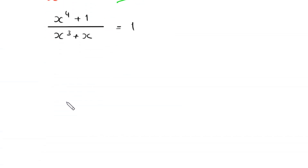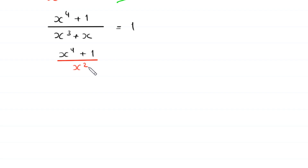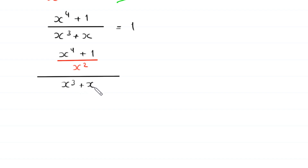This equation will become: x to the power 4 plus 1 divided by x cubed plus x is equal to 1. Now we divide both the numerator and denominator by x squared. So the numerator x to the power 4 plus 1 is divided by x squared, and the denominator x cubed plus x is also divided by x squared.